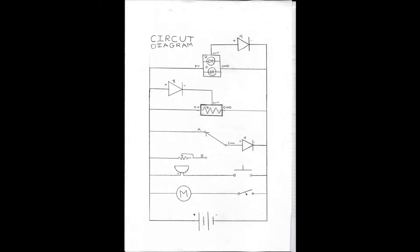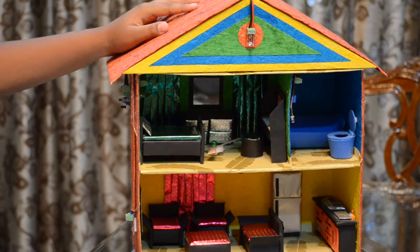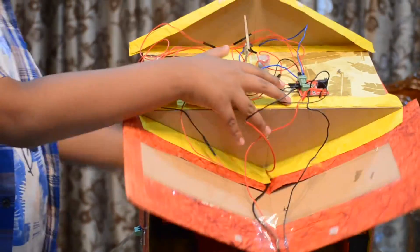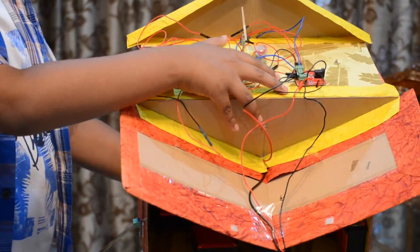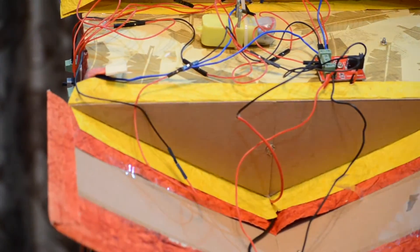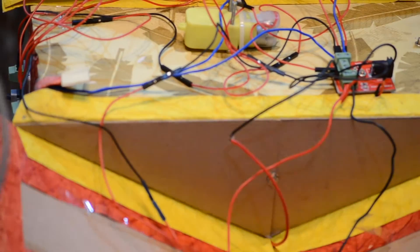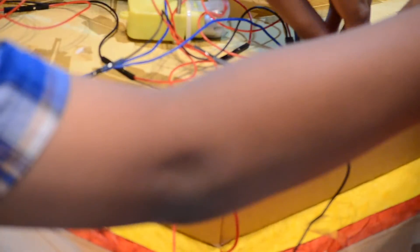This is the circuit diagram of the project. The five circuits are connected in parallel to the battery so that the circuits get the same amount of voltage. This is the model house in which I have placed the circuits. The roof has the power supply board which connects to the battery with the USB to barrel jack cable. All of the boards connect to the power supply board for power.